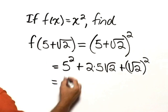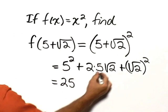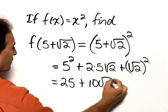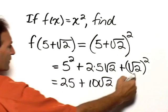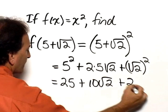Simplifying further, this is 25 plus 10 square roots of 2. The square root of 2 squared is 2.